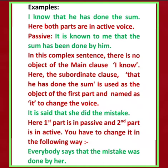Here in this complex sentence, there is no object of the main clause 'I know.' The subordinate clause 'that he has done the sum' is used as the object of the first part. So it is named as 'it' to change the voice: 'It is known to me that the sum has been done by him.'